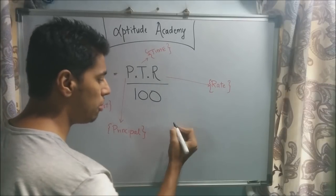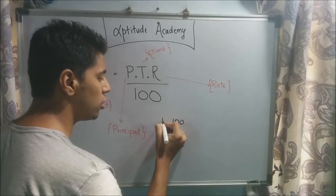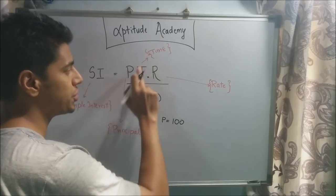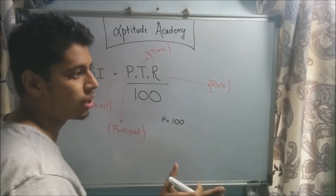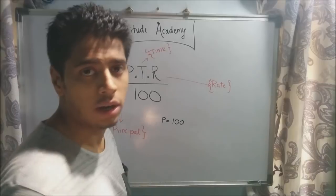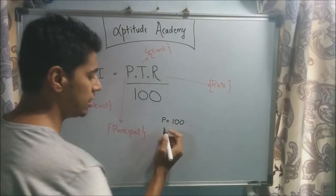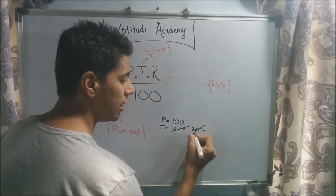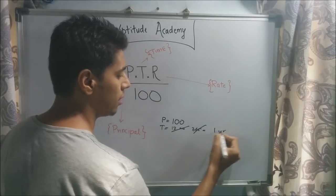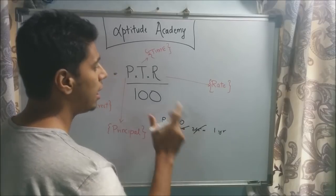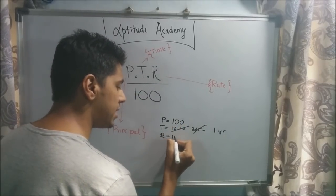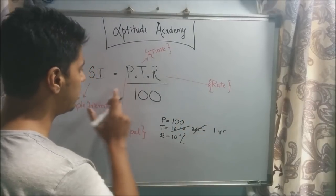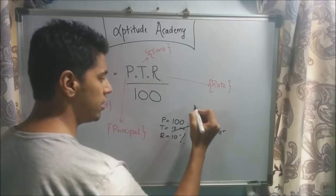What is principal? Principal is the amount of money that you deposit. Here you deposit 100 rupees, so P is 100 rupees. What is time? This is the part where most students go wrong — time is always denoted in years, not in months, not in days. You've put it in for one year, so T will not be 12 months or 365 days; it will be one year, so T equals one. The bank manager promised you 10%, so R is 10.